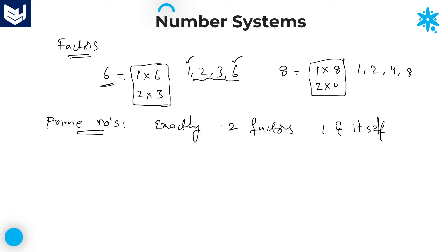For the number six, one is a factor and six itself is a factor — but six also has factors two and three, giving it four factors total. Similarly, eight has four factors. Therefore, neither six nor eight are prime numbers, because according to the definition, a prime number must have exactly two factors.